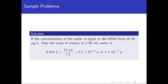Since the units need to match to cancel, we get 0.050 times 10 micrograms, which gives 0.5 micrograms. The choices are in grams, so we convert: 0.5 micrograms is 0.5 times 10 to the negative 6 grams. Converting to correct scientific notation gives 5 times 10 to the negative 7.